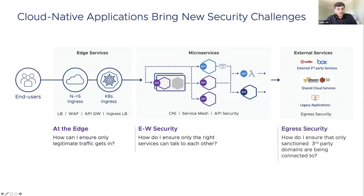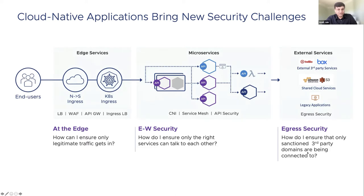Modern applications are increasingly relying on external third-party services such as Twilio and Box, shared cloud services such as S3, and legacy applications. As we consider external interactions, we need to ensure that only valid third-party domains are being connected to. In this session, we'll focus on the egress security aspect of securing modern cloud-native applications, walking through the challenges and describing the solution to add egress observability and security.